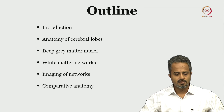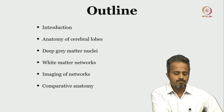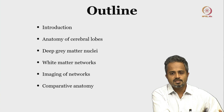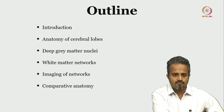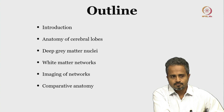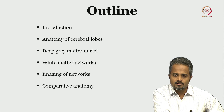This lecture is outlined with a brief introduction, followed by the anatomy of cerebral lobes, deep grey matter nuclei, white matter networks, and imaging of those networks, culminating with a comparison with rodent anatomy. In subsequent lectures we will go into detail with rodent neuroanatomy and those experiments.